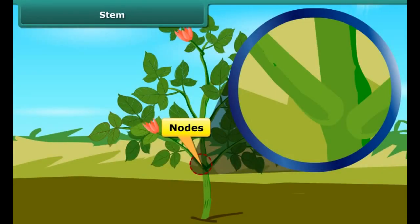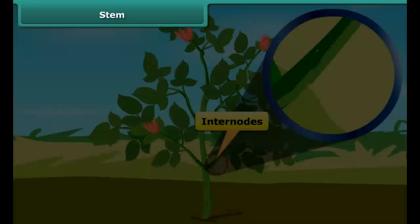The stem is divided into nodes and internodes. Nodes are the swollen portions of the plant that hold buds, which grow into leaves, flowers, etc. Internodes, on the other hand, are the stretches between two nodes.